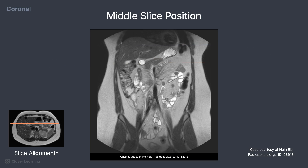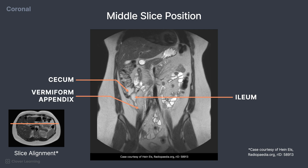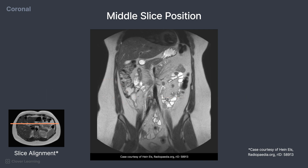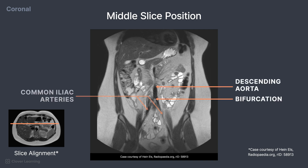Also on this image, the terminal ileum is demonstrated. This structure connects with the cecum of the large intestine. The vermiform appendix is demonstrated inferiorly. This slice also shows a portion of the vascular system, including the descending aorta and bifurcation to the common iliac arteries.